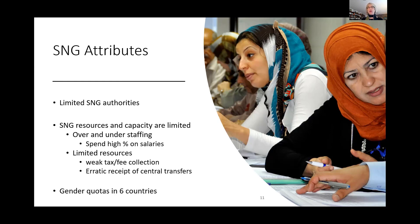There are gender quotas in six countries. Tunisia has the best, at a 50-50 split where you have to alternate men and women on party lists. Syria and Yemen don't have gender quotas, and neither does Lebanon — Lebanese women have been arguing for gender quotas for years without success. Two countries, Tunisia and Egypt, have youth quotas, though it doesn't matter for Egypt because they don't currently have any of the elected councils they're supposed to have.